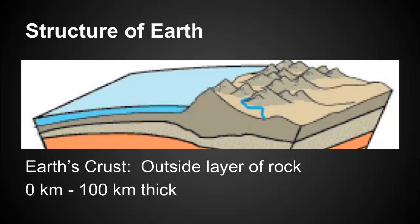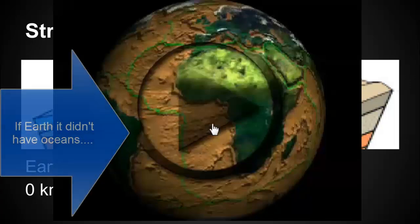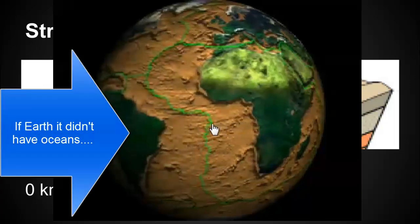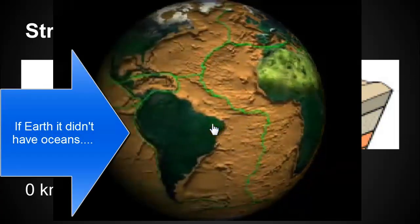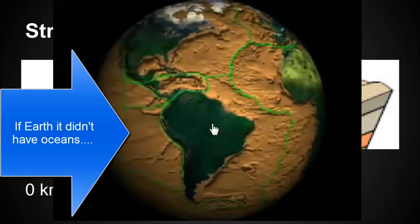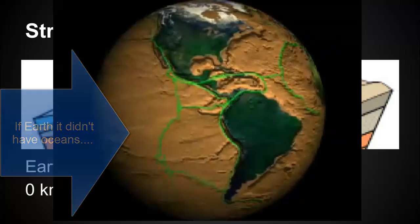The earth's crust is not always consistent — it can be very thin at different places and very thick at others. It's not always the same throughout the entire earth. We do have an entire layer of rock that surrounds the outside of the earth, and underneath our oceans, the crust is underneath the ocean.